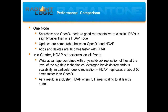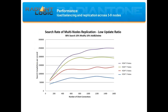However, in a cluster architecture — having more than one node — HDAP outperformed OpenDJ on all fronts. This is mostly due to the block replication model leveraged by the big data technologies upon which it was built. When it comes to peer replication speed — the speed at which you basically reach a consistent image across all nodes — HDAP is 50 times faster than OpenDJ replication. As a result, we've seen linear scalability up to nine cluster nodes.